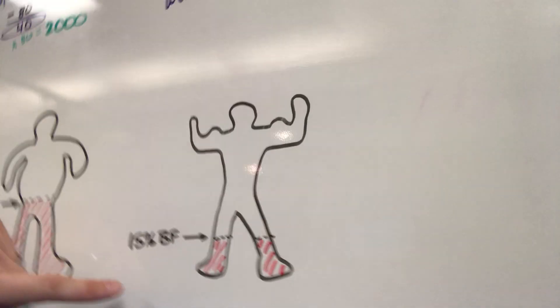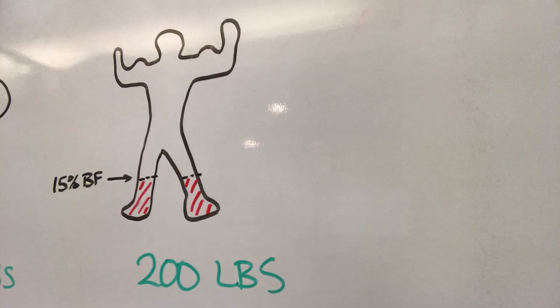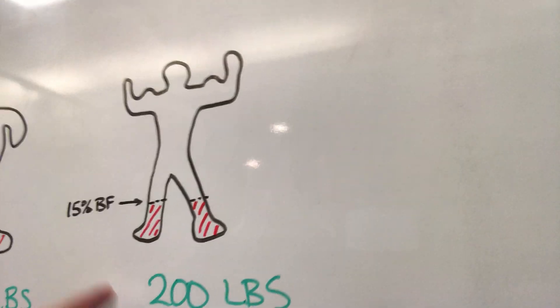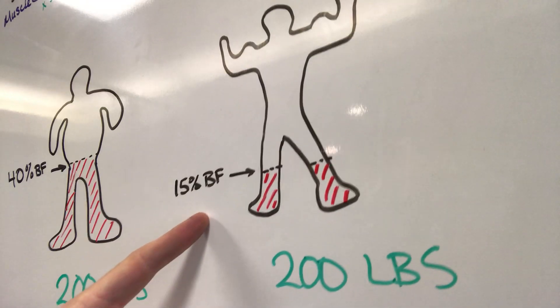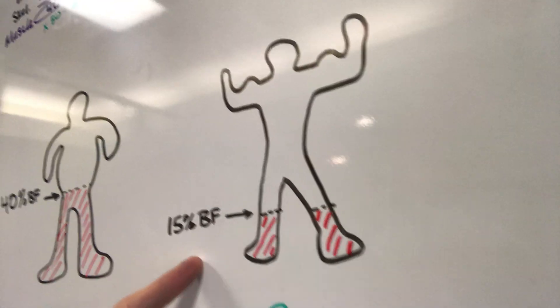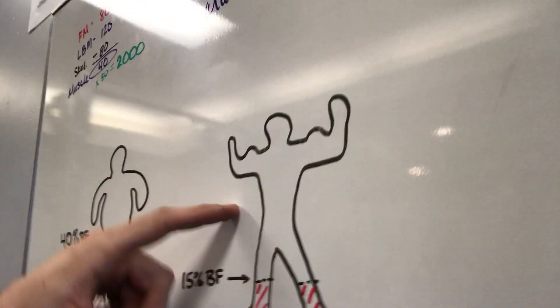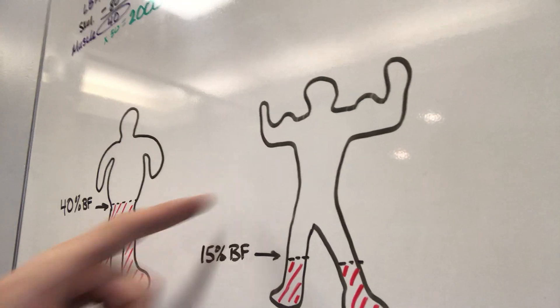Now let's say person B, the same exact weight, still 200 pounds, but only 15% body fat. So 200 pounds, 15% body fat. That means the rest of this stuff up here, the 85%, and in this person's case, the 60%. What is that if it's not body fat?